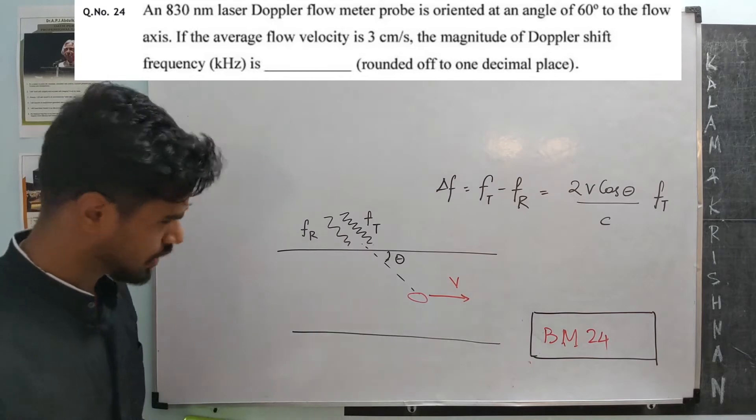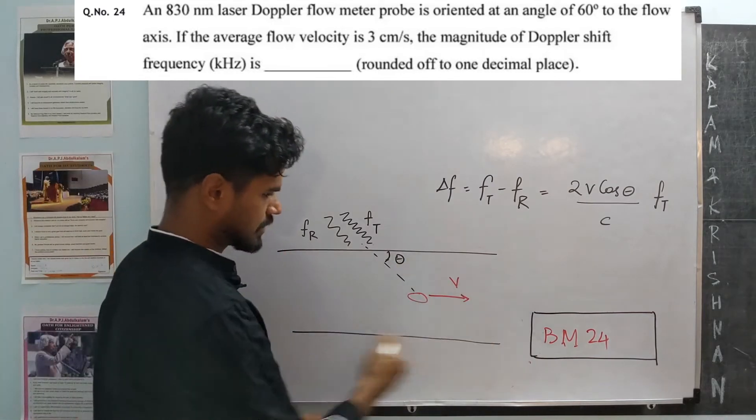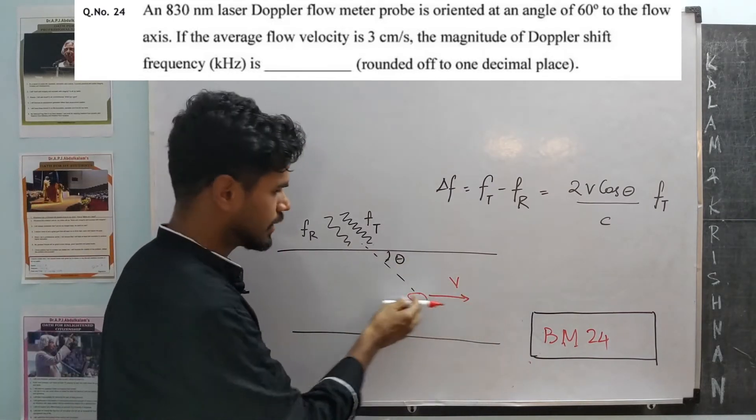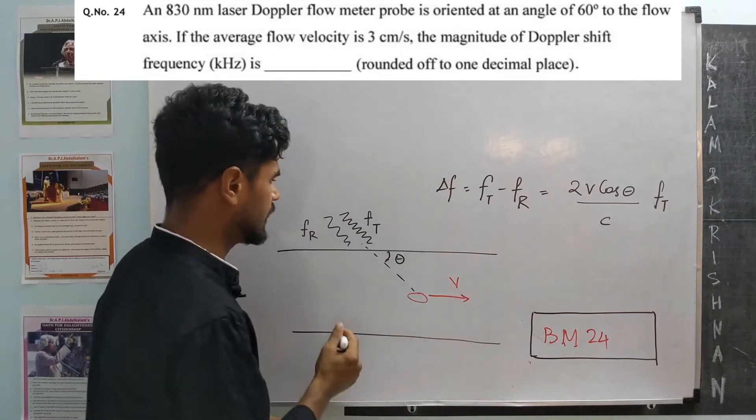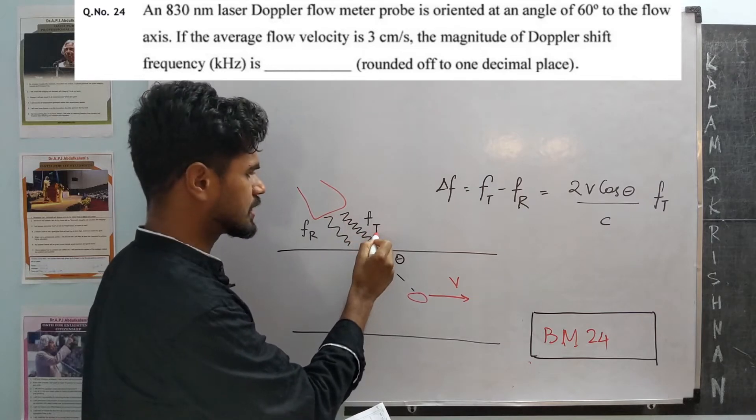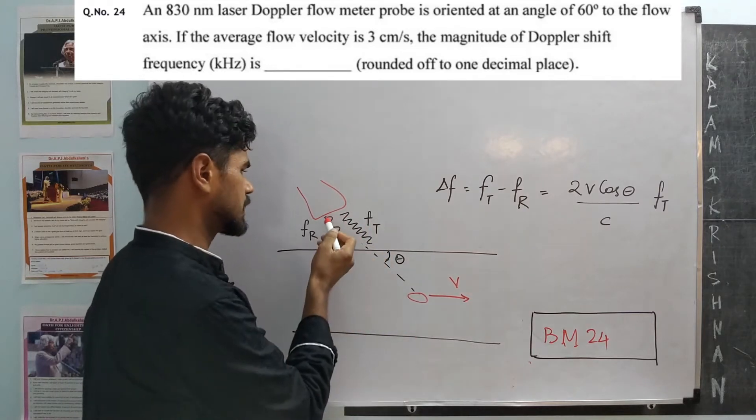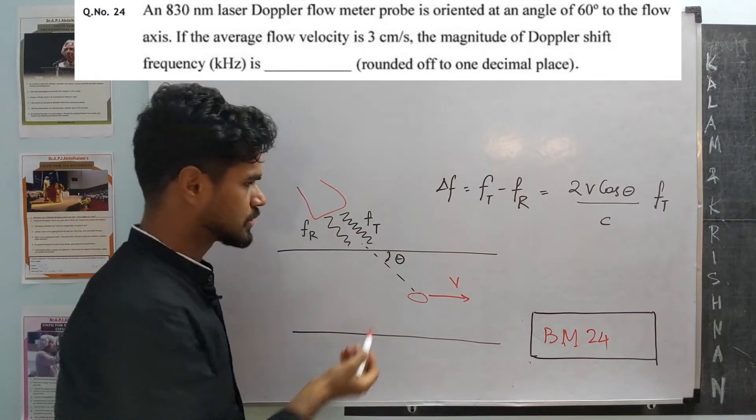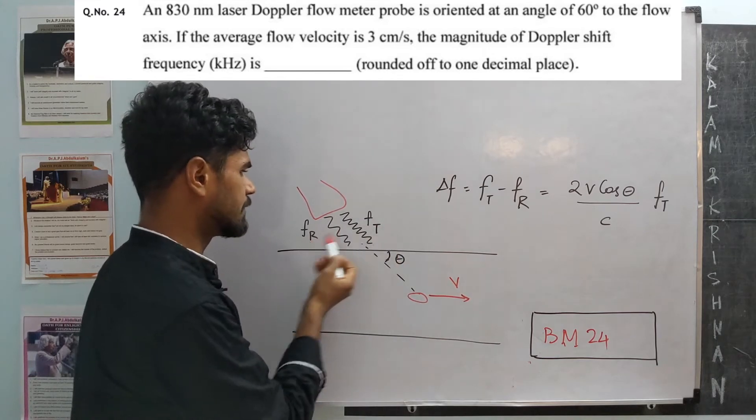Okay, so given some blood vessel and some flow axis, blood is flowing with velocity v. We use a Doppler flow over here, sends a signal with frequency ft and gets back signal with frequency fr. So transmitted and received frequencies.